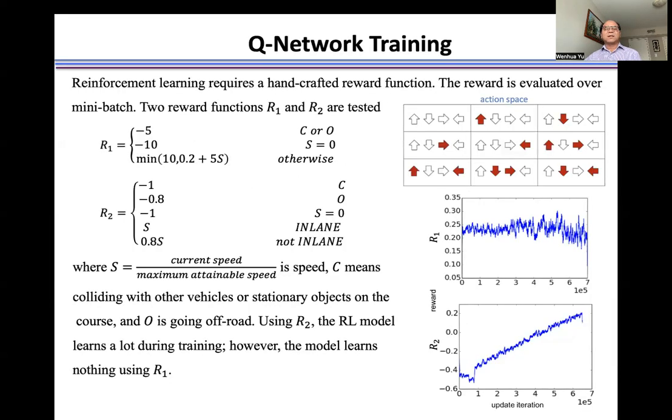In reinforcement learning, a big challenge is how to design a reward function. For example, here is the action space with a total of nine actions, like no operation, make a right turn, speed up at the same time, make a left turn, and so on.